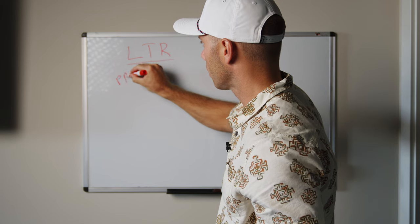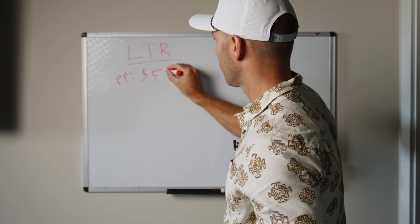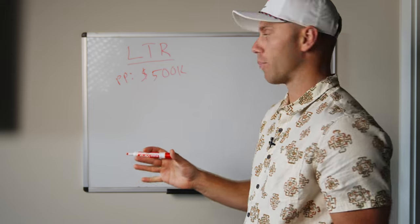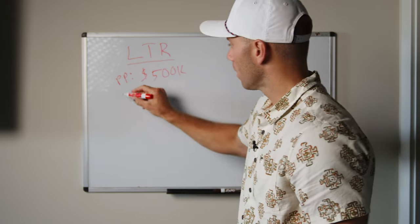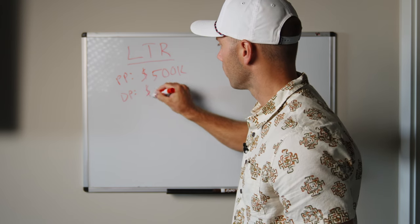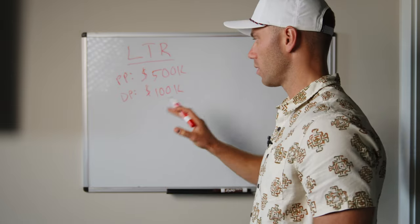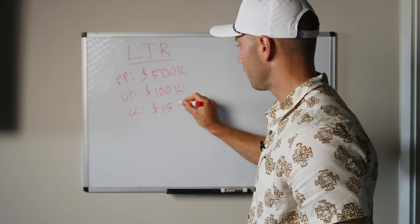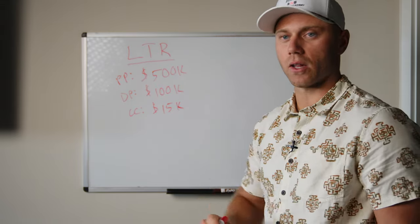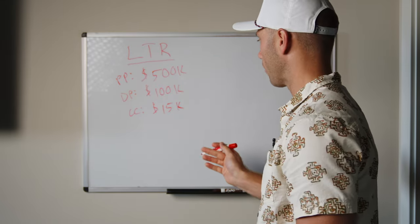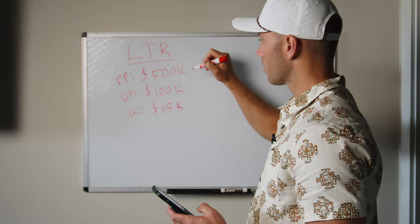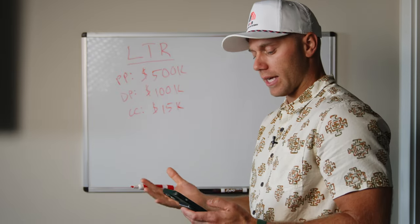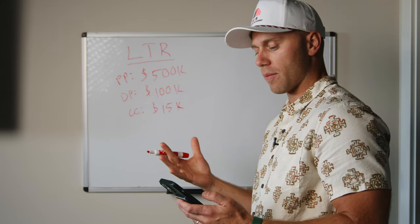Let's assume a purchase price of $500,000. There are different types of loans you can leverage, but for the sake of this example we're going to assume a 20% down payment, so $100,000 down. Closing costs at about $15,000 — so all in, we're at $115,000, assuming you don't need to do any rehab or remodel. With $400,000 principal balance on the mortgage at a 7.5% interest rate, PITI would total right about $3,200.